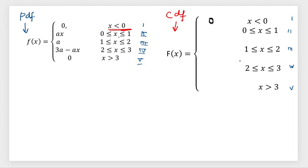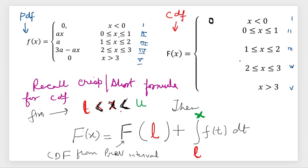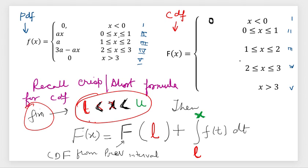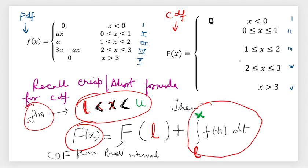Before proceeding, let us quickly recall the formula. The PDF is given for an interval and we want to find the CDF. The formula says: only integrate the current PDF function — the lower limit is fixed as given in the question, the upper limit is arbitrary (x). If there is a CDF of the previous interval, just plug in the lower value of the current interval into that previous CDF to get its contribution.